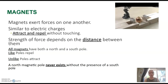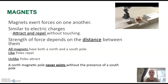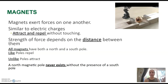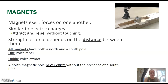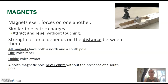Like poles — a north and a north, or a south and a south — are going to have a force that repels one another, where unlike poles, like a north and a south, are going to attract. Sound familiar? It should. A north magnetic pole can never exist without the presence of a south pole.